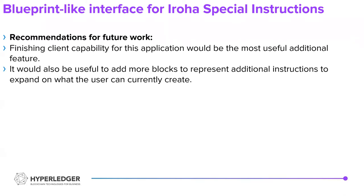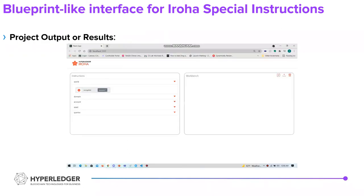Recommendations for future work: finishing the client capability for this application would be the most useful additional feature. It would also be useful to add more blocks to represent additional instructions to expand on what the user can currently create. As it stands, the application only supports some of the more basic instructions, but there are more complicated instructions — things like triggers or expressions — that could be added to give the user more tools in building their own smart contracts.